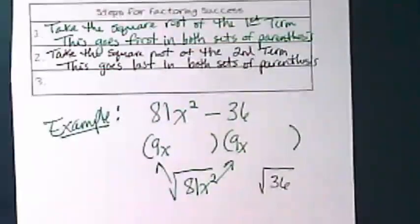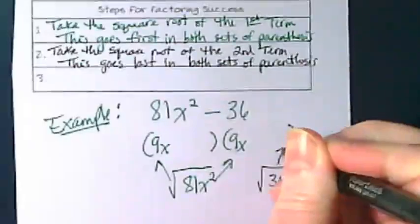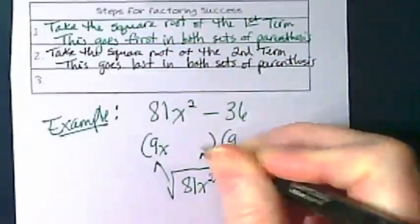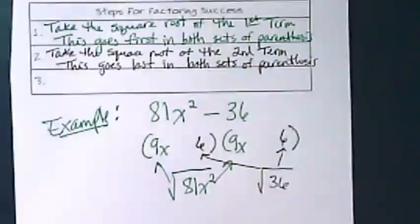Take the square root of 36, which is 6. It goes at the end of both sets of parentheses.